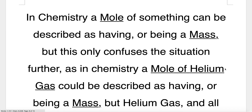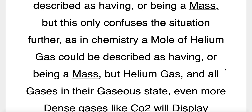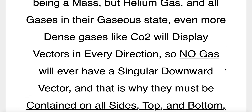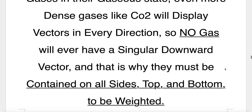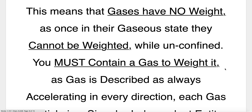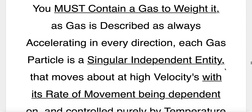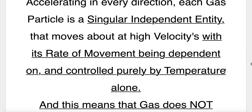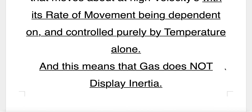In chemistry, a mole of something can be described as having or being a mass, but this only confuses the situation further. A mole of helium gas could be described as having or being a mass, but helium gas — and all gases in their gaseous state, even denser gases like CO2 — will display vectors in every direction. So no gas will ever have a singular downward vector, and that is why they must be contained on all sides, top and bottom, to be weighed. This means that gases have no weight, as once in their gaseous state they cannot be weighed while unconfined.